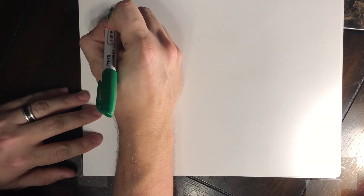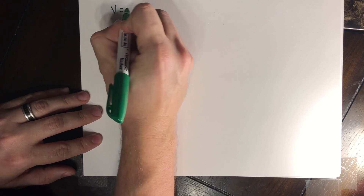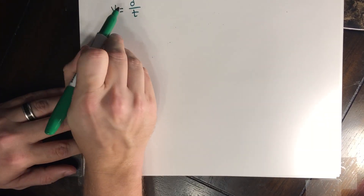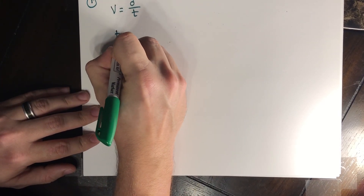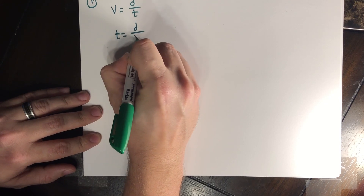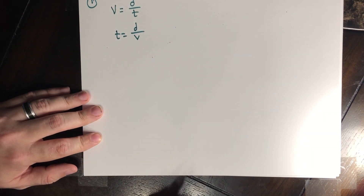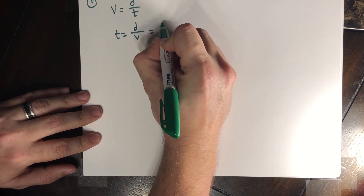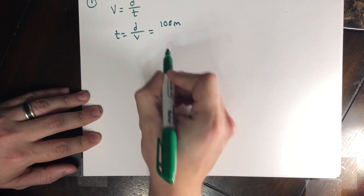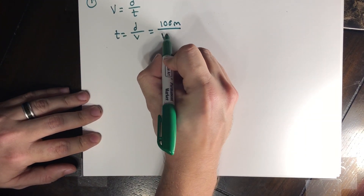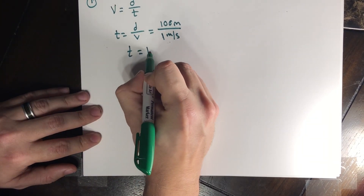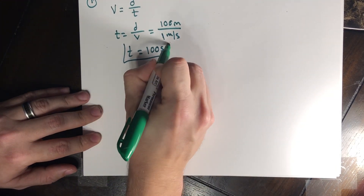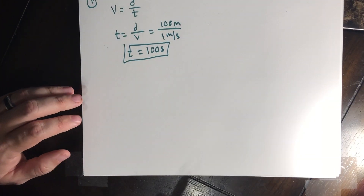This is a pretty simple equation we've used before: velocity equals displacement over time. Solving for time gives us time equals distance over velocity. So our displacement is 100 meters and our maximum velocity is 1 meter per second. Dividing that out, we get 100 seconds for him to get across the river swimming straight with no current at all.